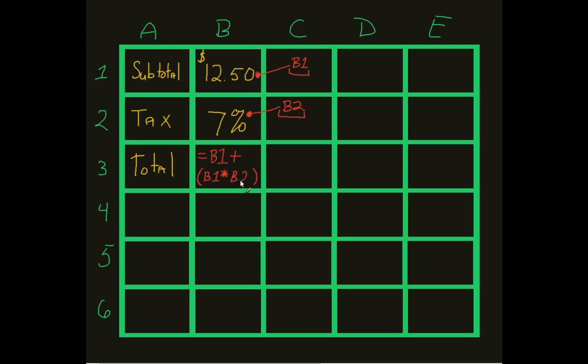That way, if 7% changes, you know, no taxation without representation, massive uprising, and sales tax is obliterated from the United States. Cool. Awesome. Well, I need to make sure that my spreadsheet works.